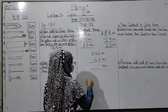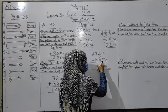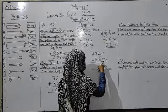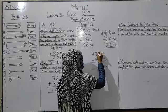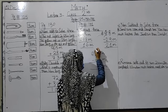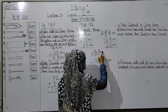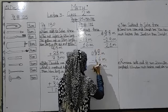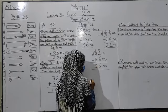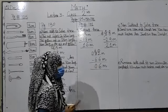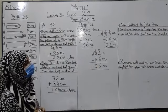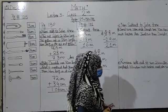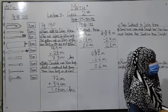F wala dekhein: 2 mein se 6 minus nahi ho sakta. 1 carry lenge — 12 mein se 6 minus kiye 6, aur 6 mein se 6 minus kiye 0. To answer sirf 6 cm aata hai.